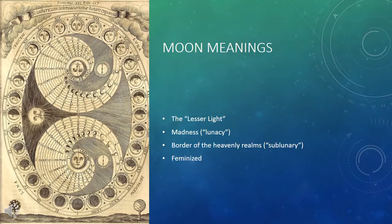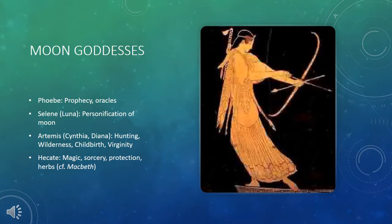The moon is known as the border of the heavenly realms in Renaissance astrology. Above the moon is the world of the heavens — the world of unchanging perfection. The sublunary world, the world we live in below the moon, is the world of impermanence and change, life and death and so forth. The moon is also very frequently, in Shakespeare's time, feminized — associated with various mythical goddesses.